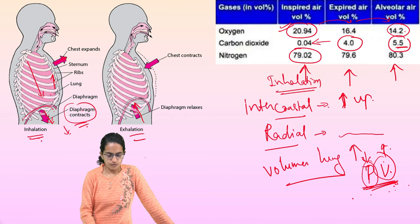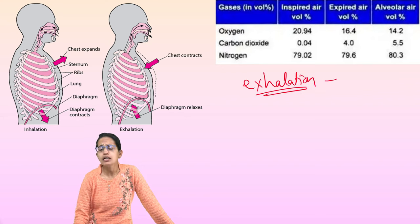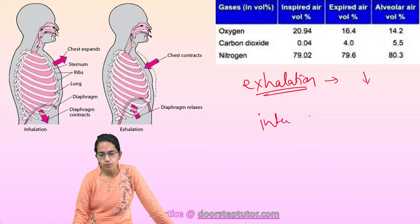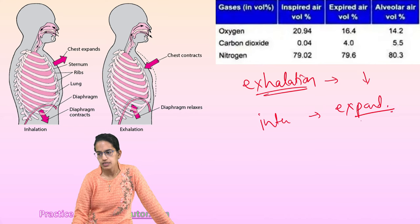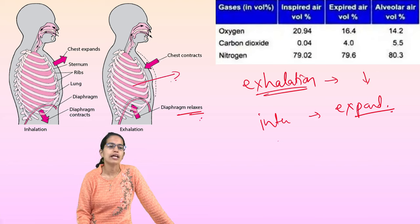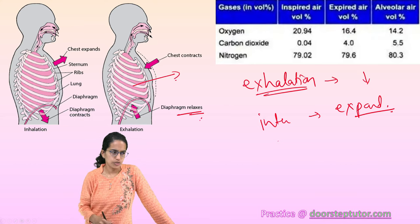During exhalation, the reverse occurs. The thoracic cavity reduces in size, the intercostal muscles relax, and the radial muscles cause the diaphragm to return to its original dome shape. The volume reduces, and as a result the air moves out — that is the exhalation process.